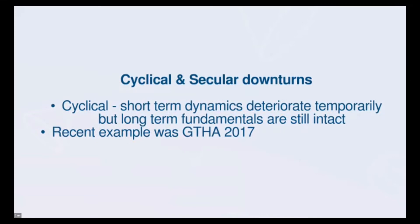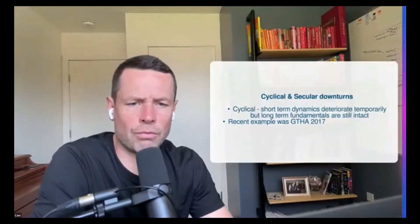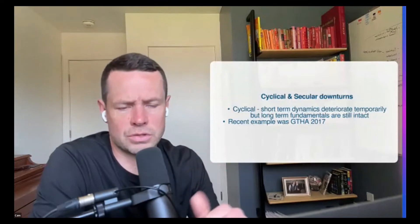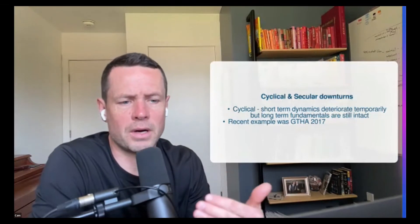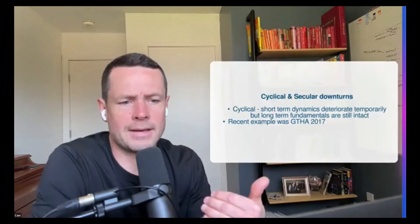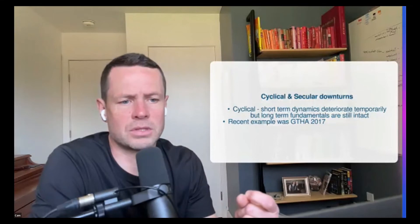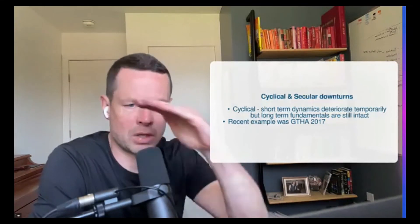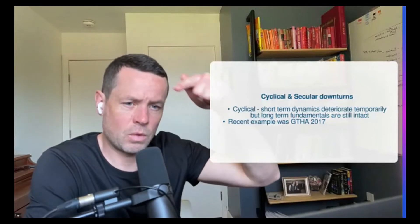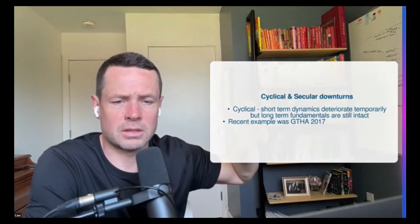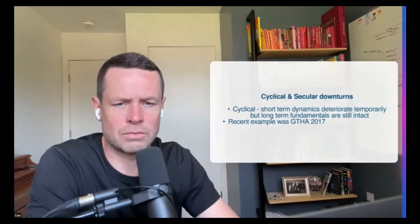A recent example of a cyclical downturn would be the Greater Toronto Hamilton Area in 2017. We had that real ramp-up in January, February, March, and then interest rates started to go higher and policy changes came into effect — the 15-point buyer plan and a foreign buyer tax. That was a situation where the short-term dynamics deteriorated quickly. The market did a 10–15% correction, then basically flatlined for a while, then recovered fairly quickly because the long-term fundamentals in the area weren't attacked. Things recovered and moved forward.